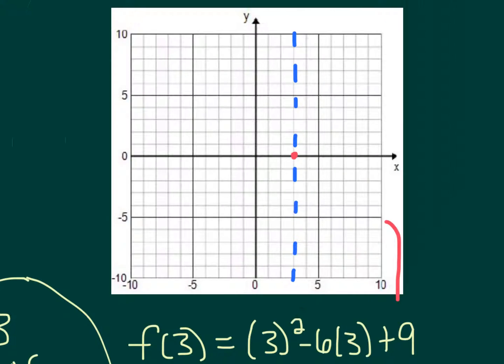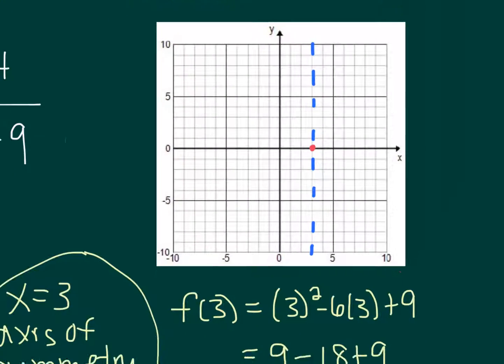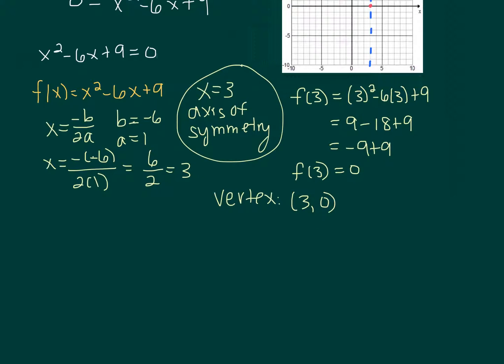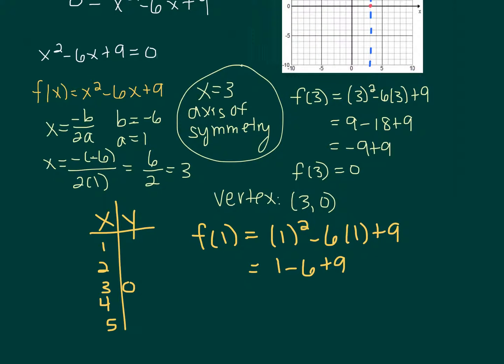So we still need to find some other points. Since our vertex is at 3, we want to go 2 above, 2 below. But again, we only need to do one way because we know we're going to have twin points occur. So in our table we know that 3 is the output of 0. We want to find 2 and 1, and therefore find 4 and 5. So let's just do f(1) first because that's a little easier. It's 1² minus 6 times 1 plus 9. That's 1 minus 6 plus 9. So that's negative 5 plus 9, which is 4. So f(1) is 4. That means also f(5) is 4.